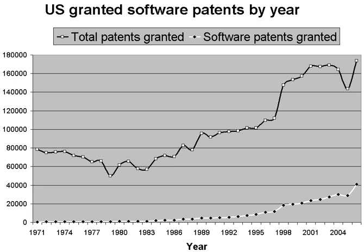An actual query that may be submitted to the USPTO database to retrieve patents granted in 2005 is as follows: ISD, 1 January 2005 to 1 January 2006, AND SPEC, software OR computer AND program, AND APT, 1, ANDNOT TTL, chip OR semiconductor OR bus OR circuit OR circuitry, ANDNOT SPEC, antigen OR antigenic OR chromatography.